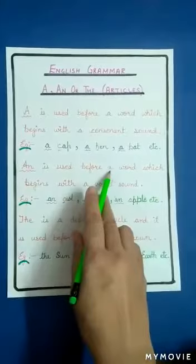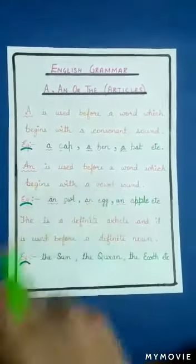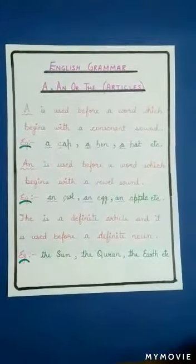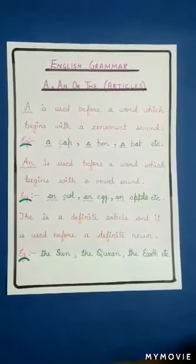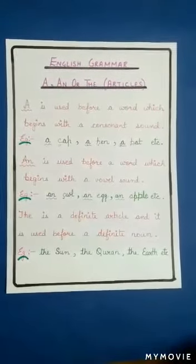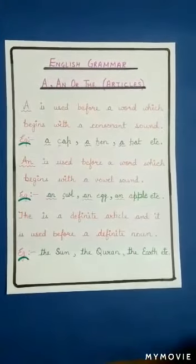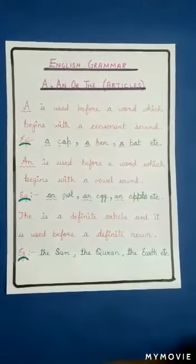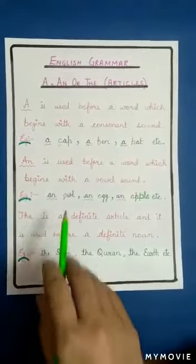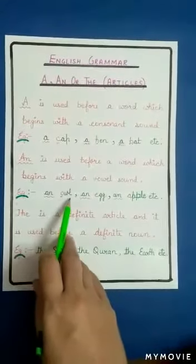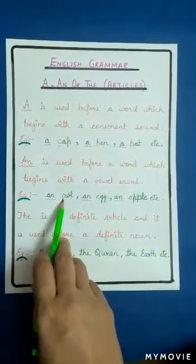'An' is used before a word which begins with a vowel sound. 'An' joh hai tab use hota hai jab koi bhi word vowel se start hota hai. Example: 'an owl', 'an egg', 'an apple', etc. 'Owl' — owl ka 'o' jo hai woh ek vowel hai.